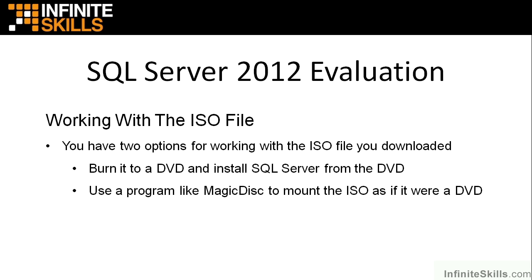There's a little easier solution. You can use a program like Magic Disk — one I use a lot — to mount that ISO as if it were a DVD and then use it to install without having to burn it to a DVD. Keep in mind, if you're using virtual machines, you can just point a virtual machine to an ISO and install it. On Windows 8, you can just right-click on that ISO file and tell it to mount it as a drive. But on Windows 7, you'll have to use some sort of program.